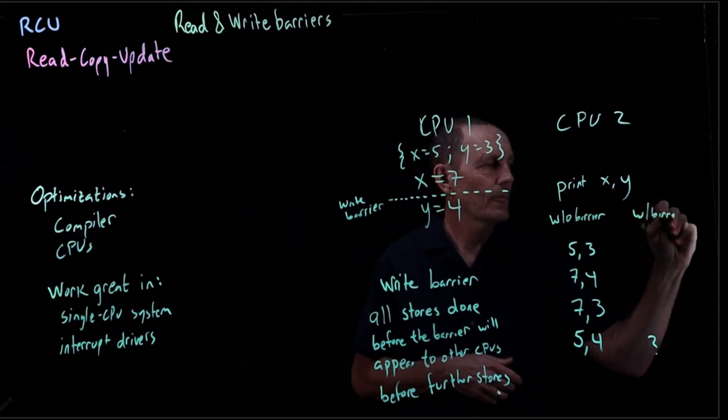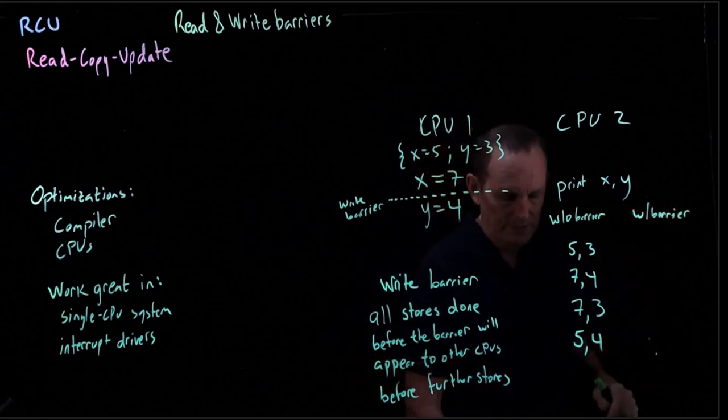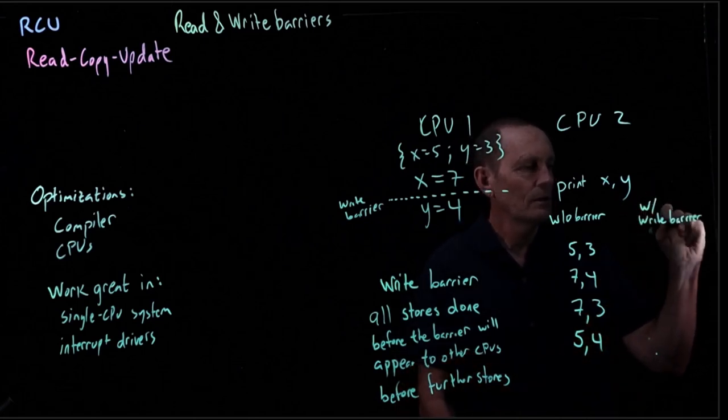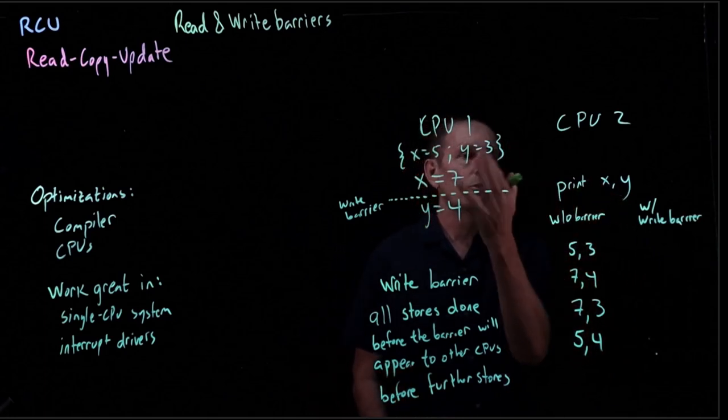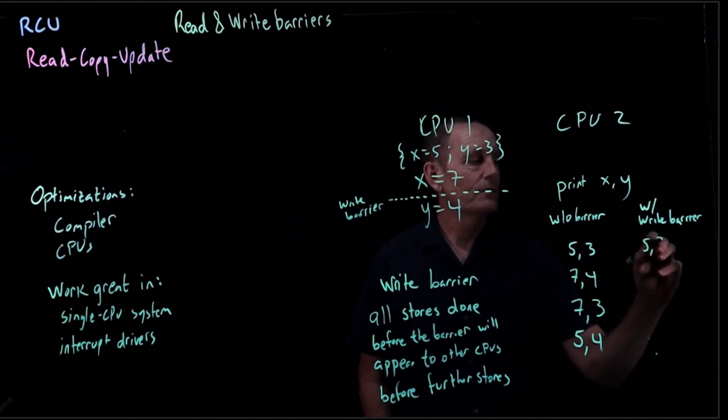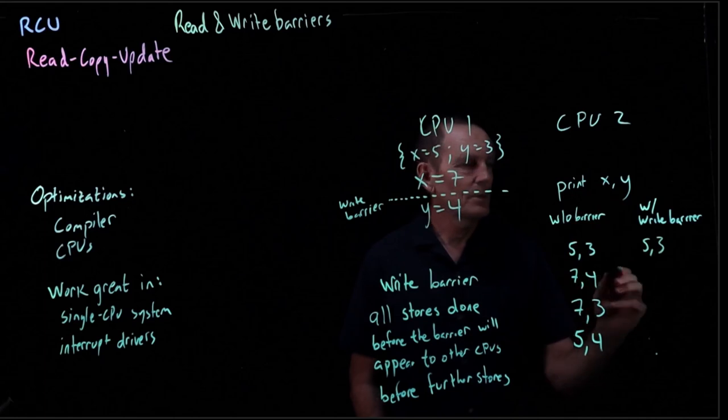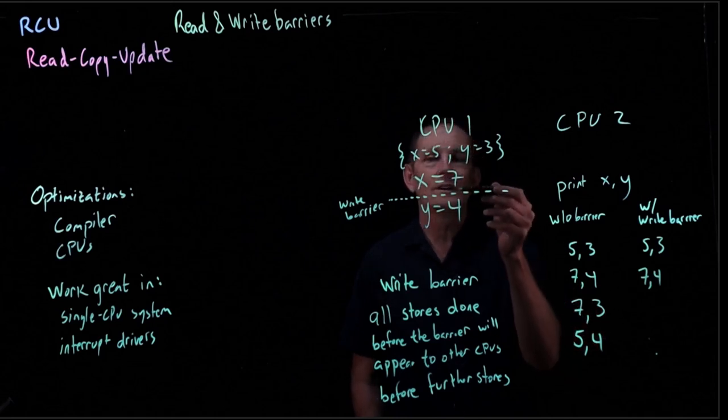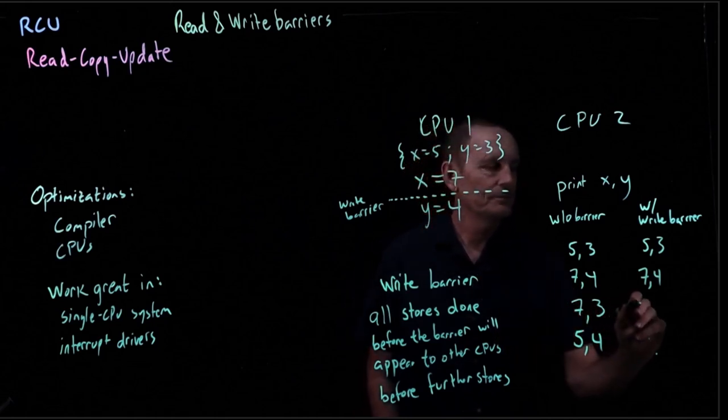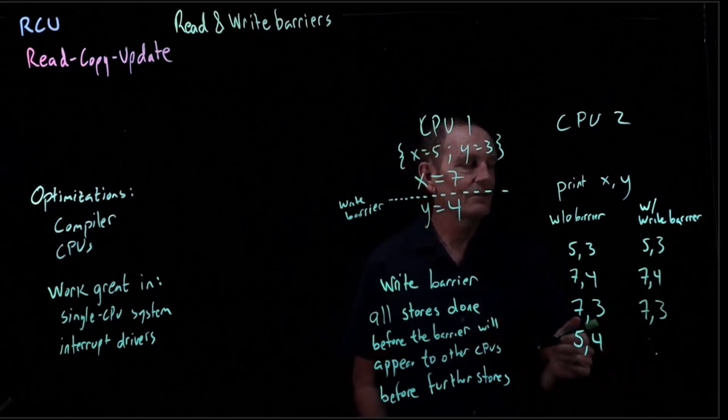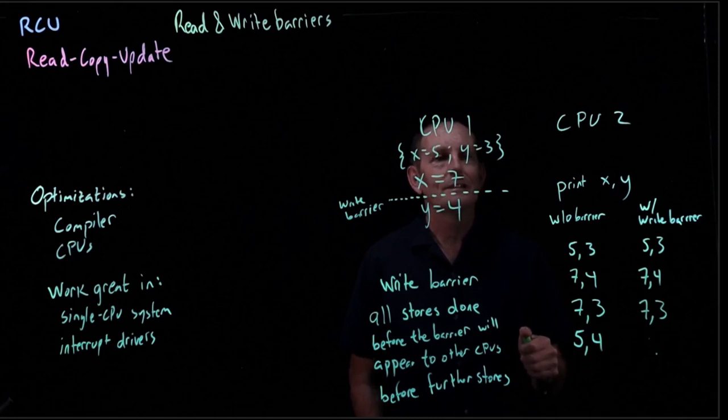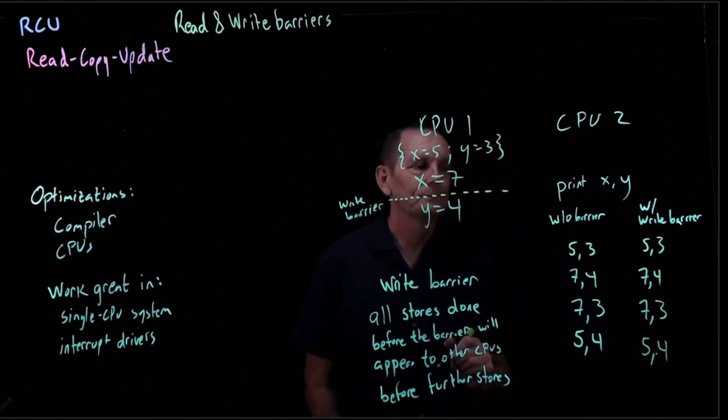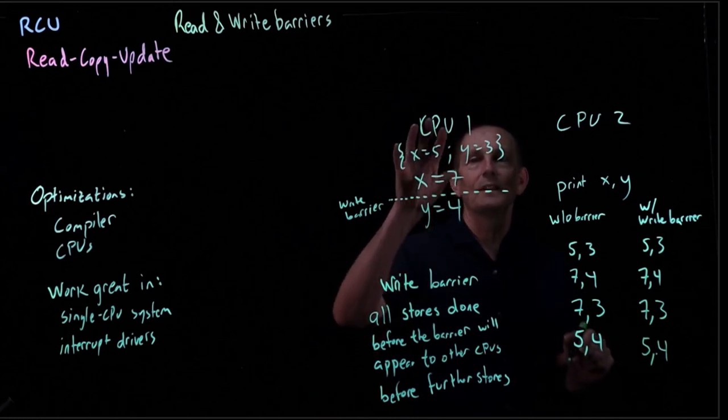So this is without a barrier. And then if we look with a barrier, so actually let's be more specific here, because there are read and write barriers. So let's say with a write barrier, could we get 5 and 3? Yes. The print of x and y could happen before an assignment happens. So we could get 5 and 3. Could we get 7 and 4? Yes, the print happens after all the stores happen. So we can get 7 and 4. Can we get 7 and 3? Yes, because we could go ahead and see the 7 and the 3, before the assignment of y equals 4 happens. Can we see 5 and 4? This is counterintuitive. But yes, we can see the 5 and the 4. And I'll explain why.